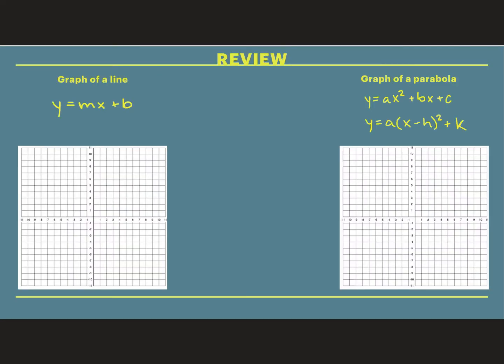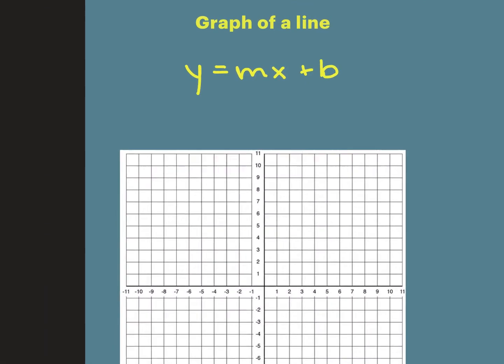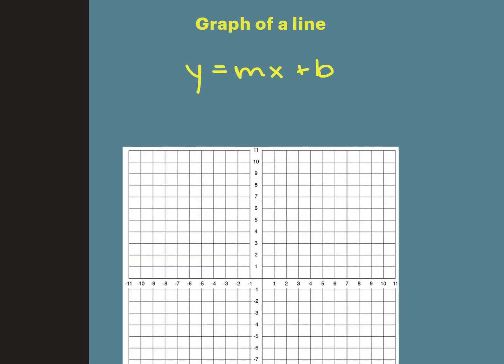So a little bit of a review from what we've done in the past. If I have an equation or a function in the form y equals mx plus b, or something like y equals 2x plus 4, what type of graph do you think it is? Linear — it's the graph of a line. It would be a linear graph.